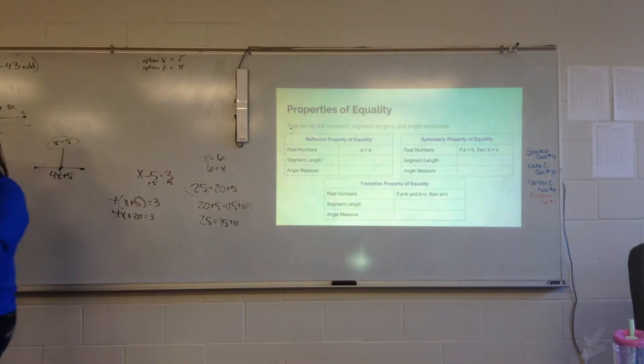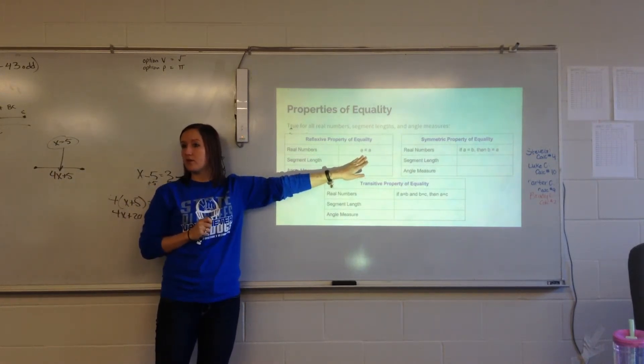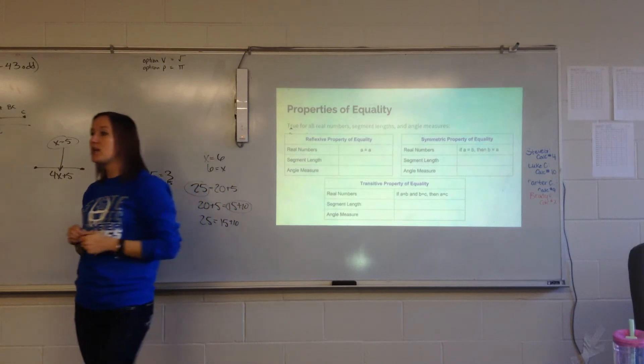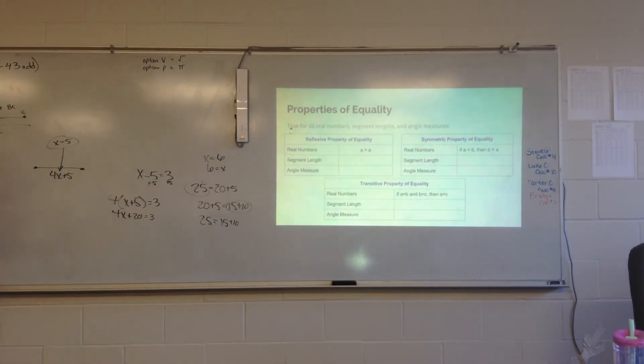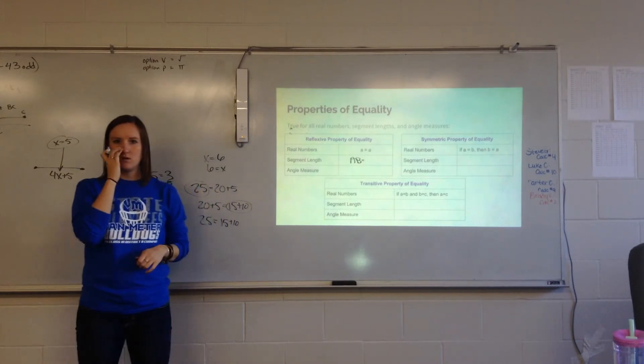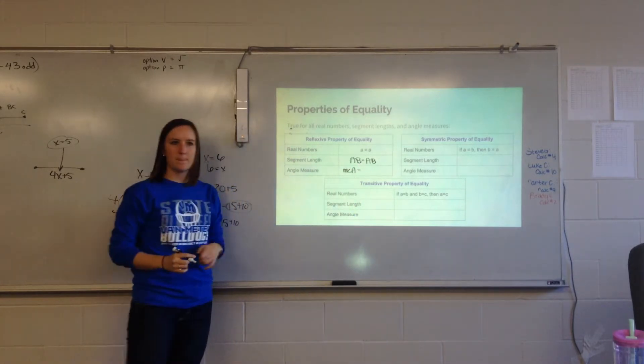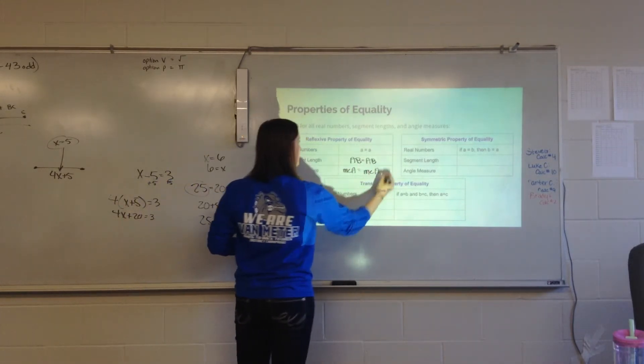Now, reflexive, what's the key word in reflexive? Reflect. Right? So if I'm thinking about a mirror, I see my reflection in a mirror, what's coming right back at me? Same thing. The exact same thing. So if I just have a number, it's going to always equal itself. When I have a line segment, it's always going to equal itself. So all three of these properties apply to segments and angles and numbers. So if I had segment AB, what is that going to equal? The distance of AB. What if I had the measure of angle A? It's going to equal the measure of angle A.